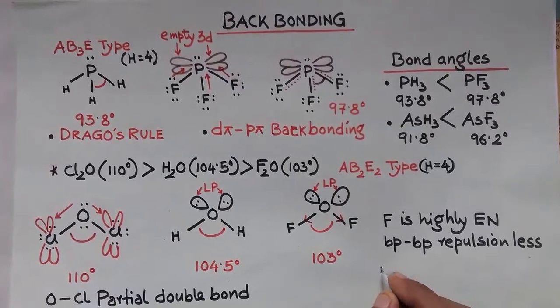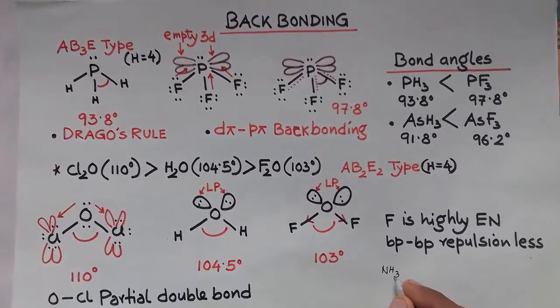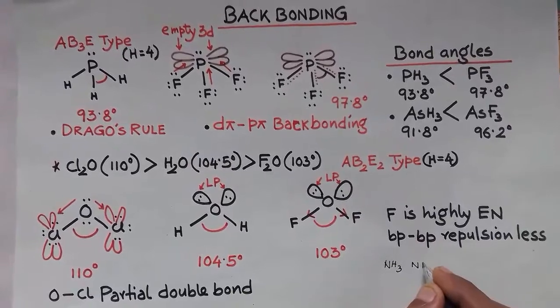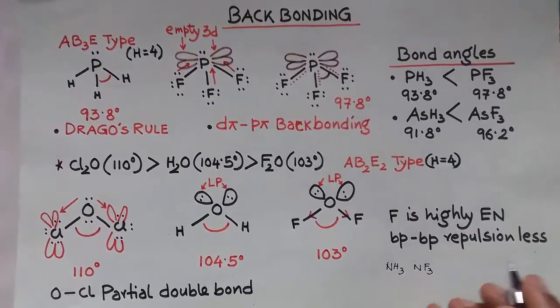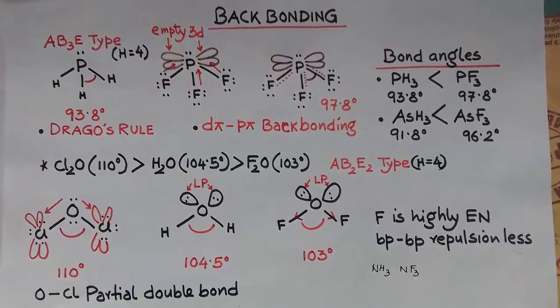In ammonia, the angle is 107 degrees, and in NF3 it's 102 degrees. Backbonding increases the bond angle.